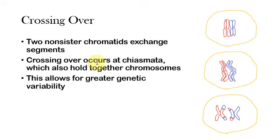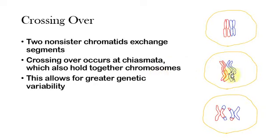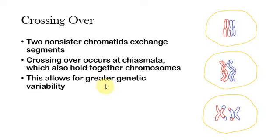Crossing over occurs at what are known as chiasmata. They're known as chiasmata because I think there's some Greek word that means X. When the chiasmata forms, it looks a little bit like an X. That chiasmata is the little section right in the middle, and these also function in holding together the homologous chromosomes in order for meiosis to occur. You can kind of see at the end of crossing over there are little sections — in this case two — that are exchanged, and it can occur at basically random points, so each time different segments will be exchanged.